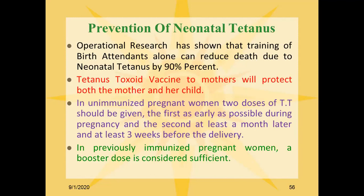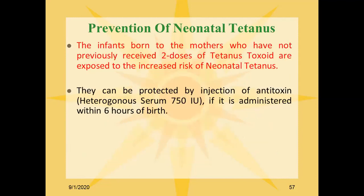Tetanus toxoid vaccine given to mothers will protect both the mother and her child. In unimmunized pregnant women, two doses of tetanus toxoid should be given: the first dose as early as possible during pregnancy, and the second dose at least one month later or at least three weeks before delivery. In previously immunized pregnant women, a booster dose is considered sufficient. Infants born to mothers who have not previously received two doses of tetanus toxoid are at increased risk of neonatal tetanus and are protected by injections of antitoxin if administered within six hours of birth.